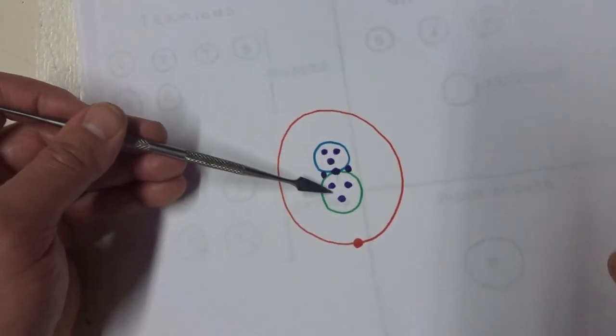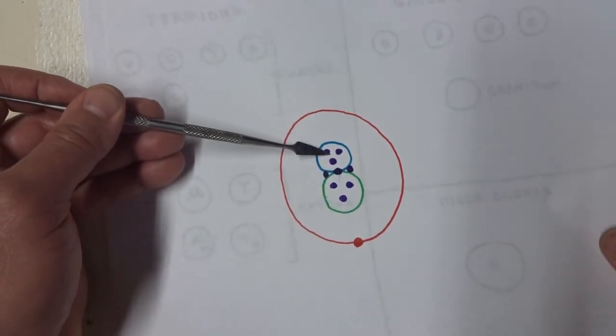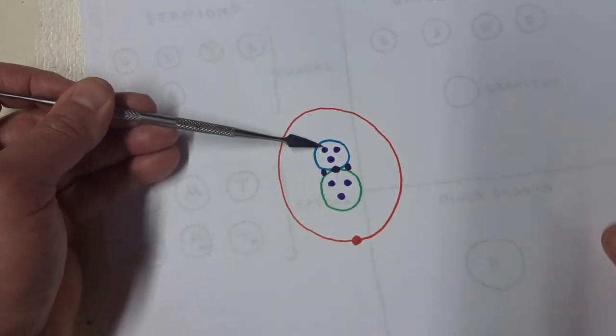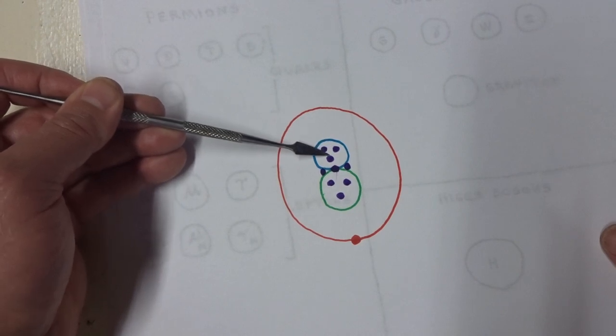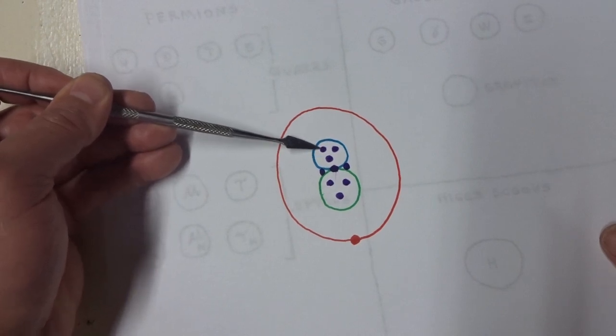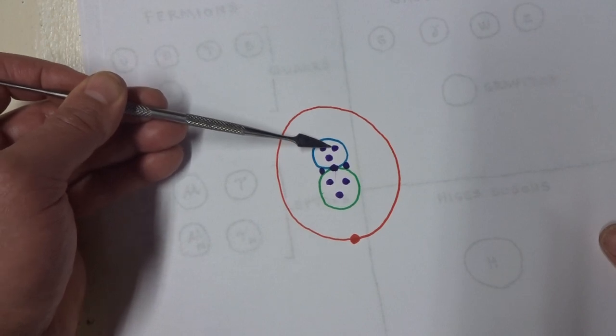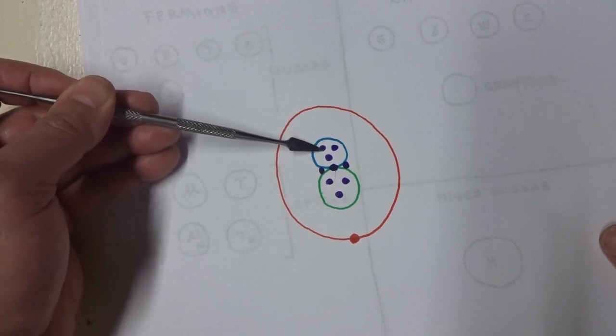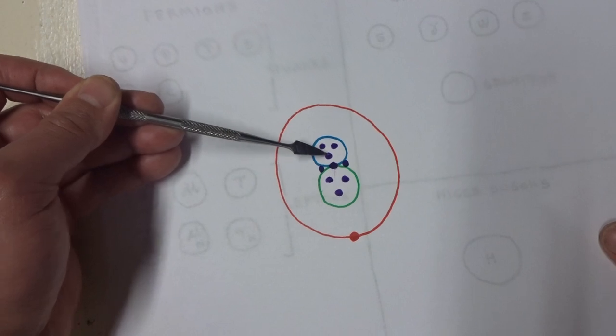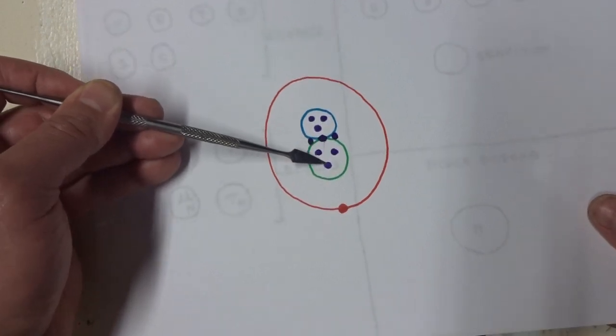In the atom, the protons and the neutrons are held together by these purple circles representing gluons. Gluons are another subatomic particle described by quantum mechanics. There are three gluons in each proton and three gluons in each neutron.